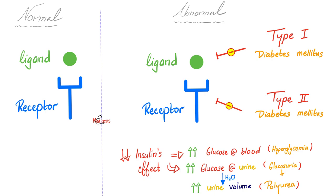Hyper means high, glyc- refers to glucose, -emia means blood. Too much glucose in the blood leads to too much glucose in the urine, called glucosuria. Since glucose is osmotically active, it pulls water with it, causing increased urine volume — polyuria. When you're losing tons of fluid in the urine, you get thirsty — polydipsia. Symptoms of diabetes: hyperglycemia, glucosuria, polyuria, and polydipsia. There is also polyphagia — you get hungry and eat a lot — because even though there's too much glucose in the blood, it cannot enter the cell to be metabolized without insulin.